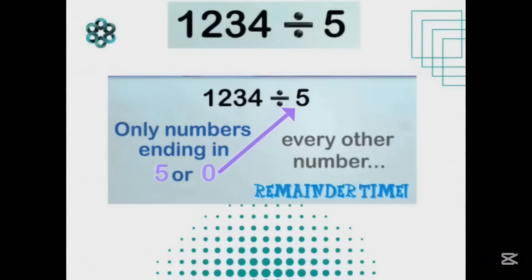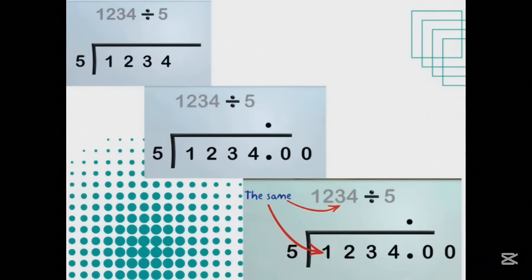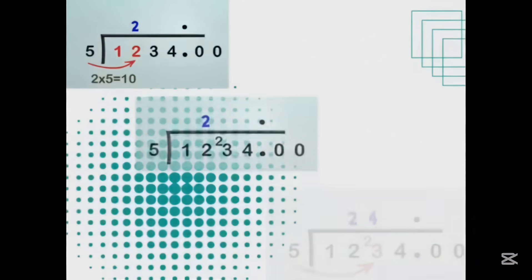Let's take the problem 1,234 divided by 5. I can see right away that I am going to get a remainder because the last digit of the dividend is 4. Only numbers ending in 5 and 0 are evenly divisible by 5 — everything else gives a remainder. Since I know there is a remainder I get ready for it by putting the decimal point in the dividend and directly above it on the answer line. I put a couple of zeros as well — these two numbers mean the same thing.